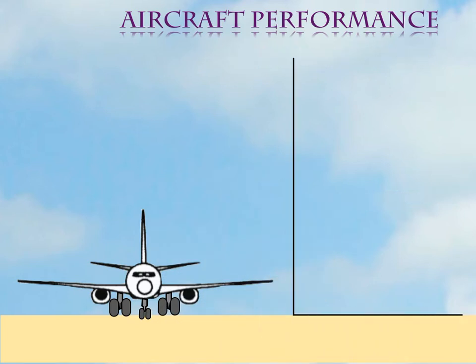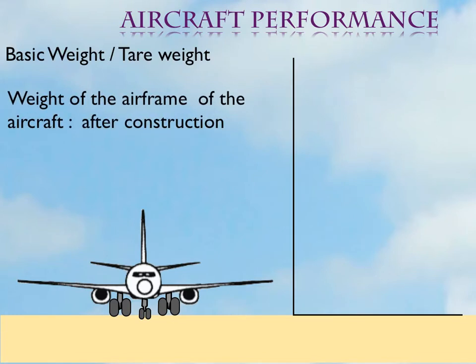Firstly, the basic weight. This is the weight of the aircraft immediately on its manufacture. It has been fitted with all equipment including the engines. This is also referred to as the tare weight. This weight works as a frame of reference when comparing different aircraft. However, this weight is not much significant operationally.